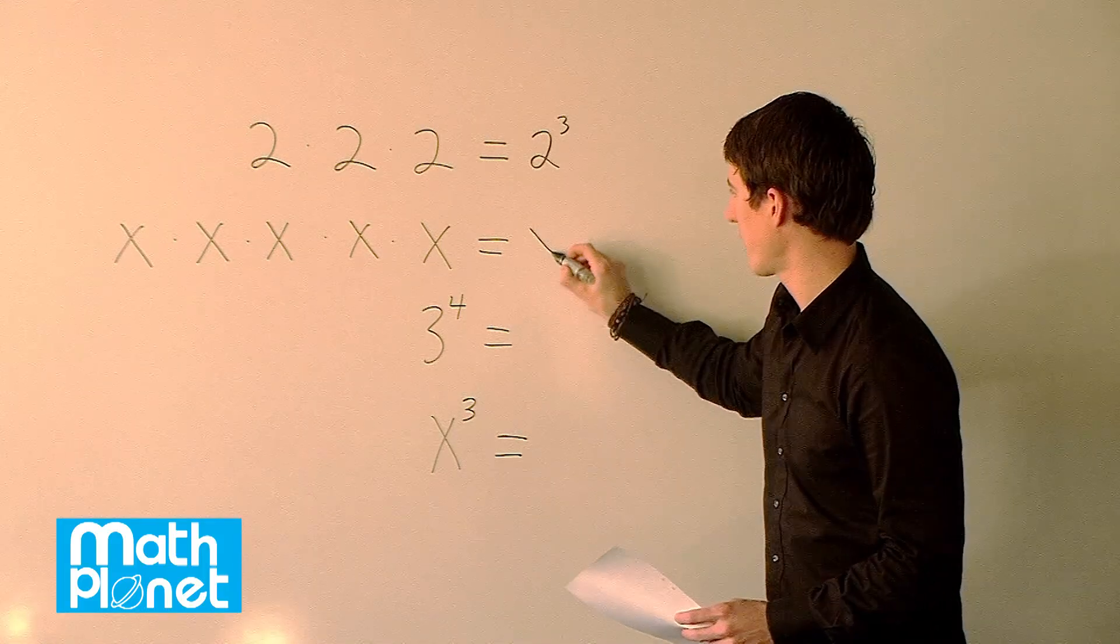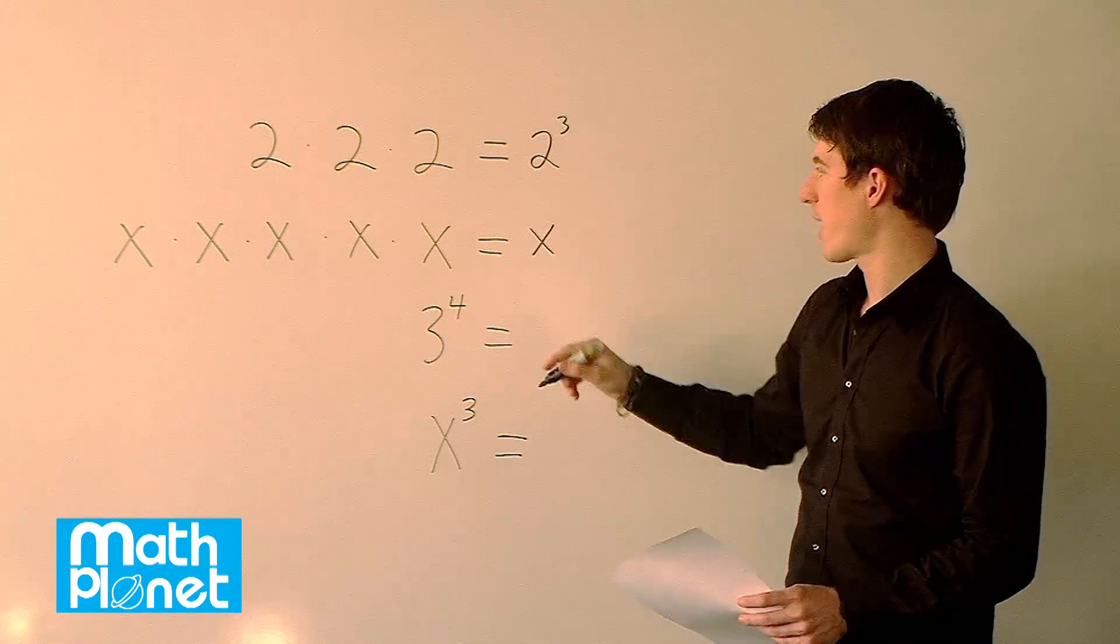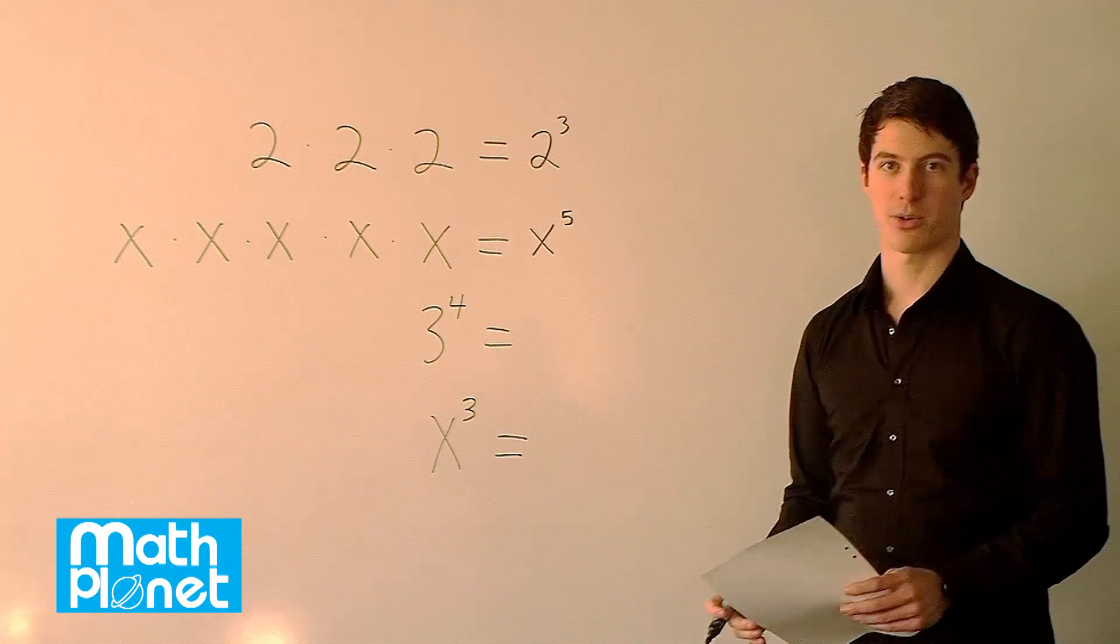This is the same idea here. So the base is x and then we count the number of x's that we have. There are 5 of them so we say this is the same as x to the power of 5.